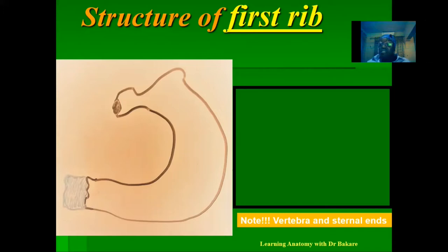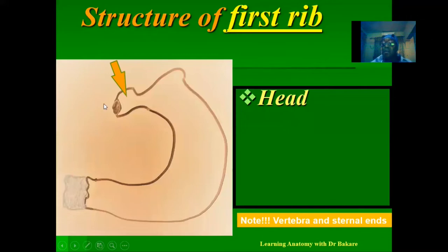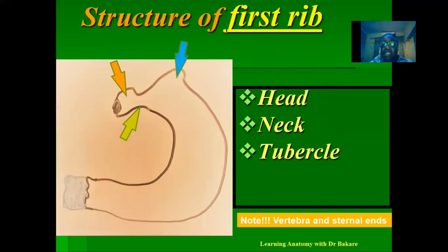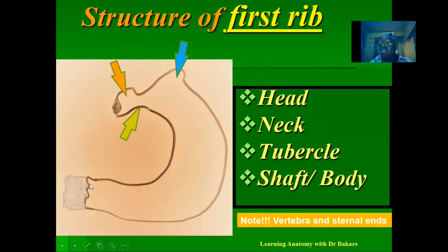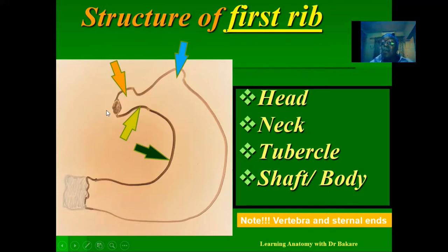To study the general configuration of the first rib, we can divide the different regions into: the head, where it forms a connection with the body of the thoracic vertebra posteriorly; the neck, which is the constriction seen after the head; a tubercle after the neck; and then the body or shaft, which runs from after the tubercle to the terminal anterior region called the sternal end. The first rib extends from the posterior part, where it connects with the thoracic vertebra, to the anterior region where it connects with the sternum.